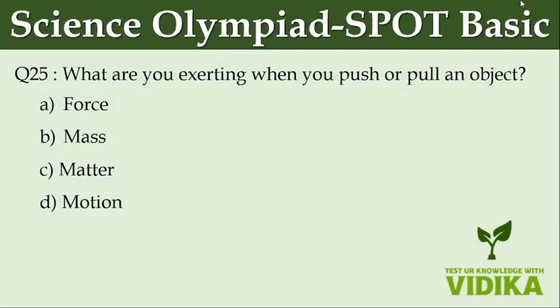What are you exerting when you push or pull an object? Option A, force. Option B, mass. Option C, matter. Option D, motion.